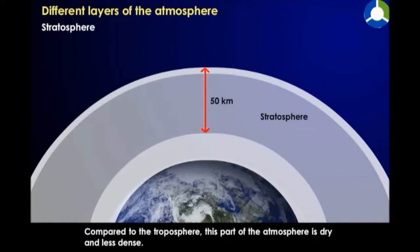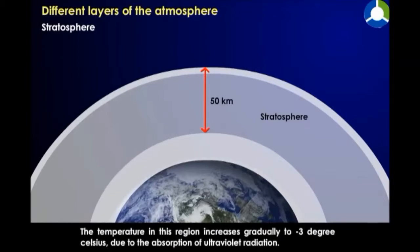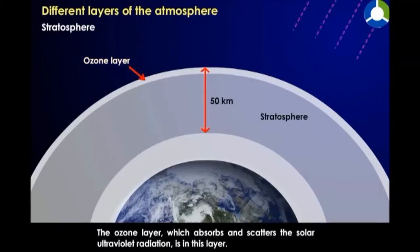Compared to the troposphere, this part of the atmosphere is dry and less dense. The temperature in this region increases gradually to minus 3 degrees Celsius due to the absorption of ultraviolet radiation. The ozone layer, which absorbs and scatters the solar ultraviolet radiation, is here.